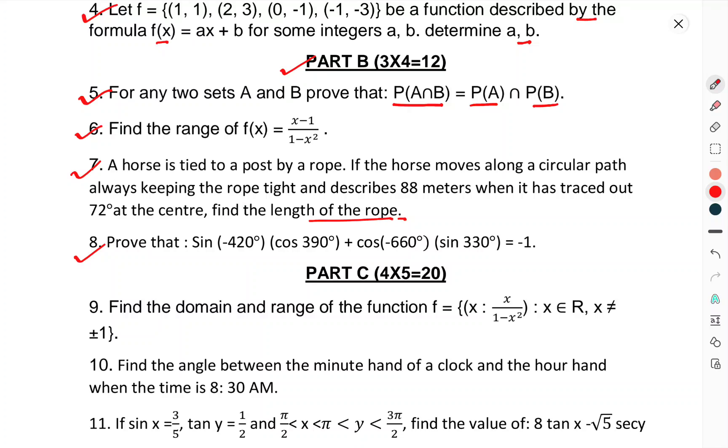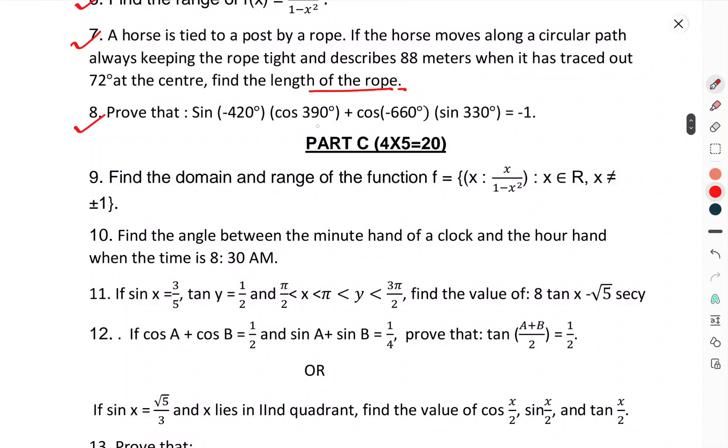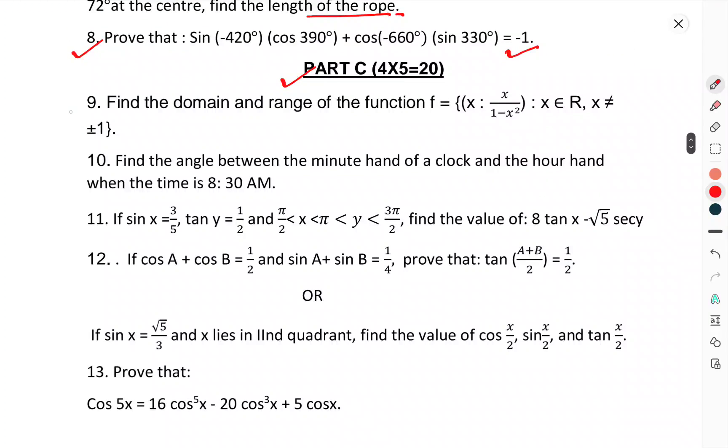Question number 8: Prove that sin(-420°)cos(390°) + cos(-660°)sin(330°) = -1. Part C contains 4 questions of 5 marks each.